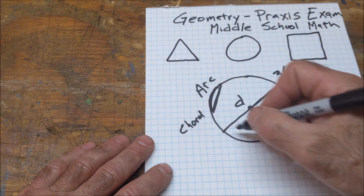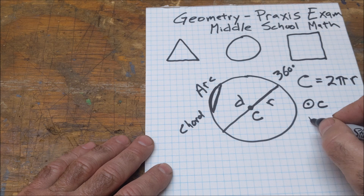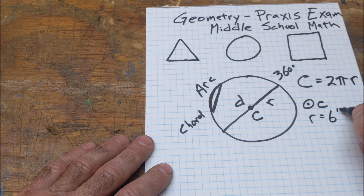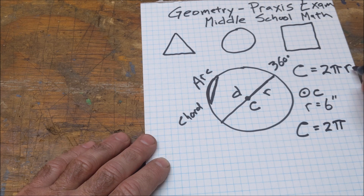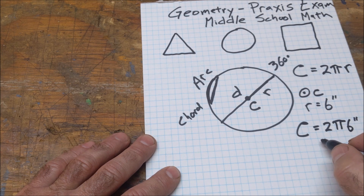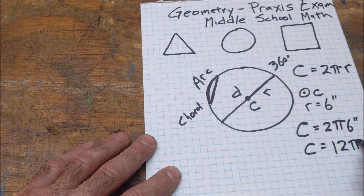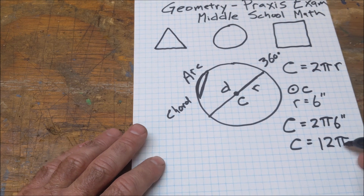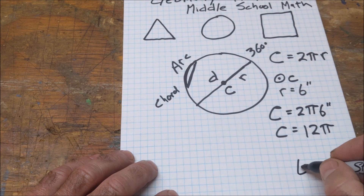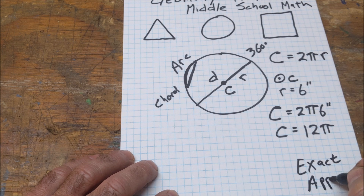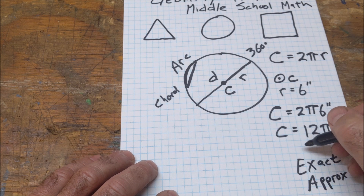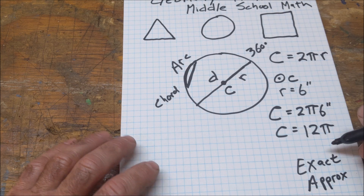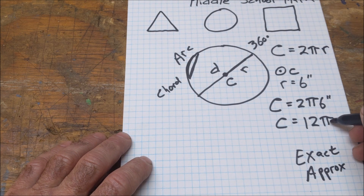So if the circumference, the length all the way around the outside, is 2πr, and r is equal to 6 inches, then the circumference is 2 times pi times 6 inches, which is 12π. If you leave the answer in terms of pi, it's considered an exact value, versus an approximate value where you'd multiply by 3.14 to get about 37 or 38. You almost always want to leave your answers in exact value in pi form.